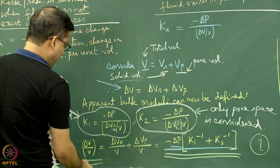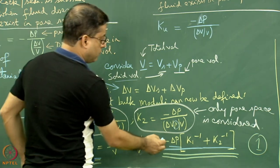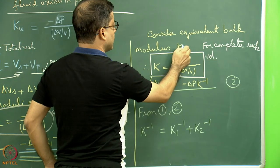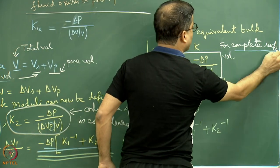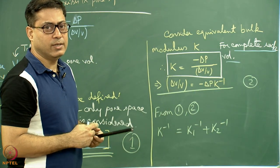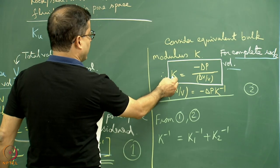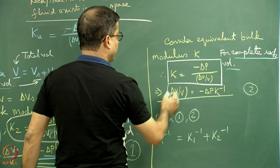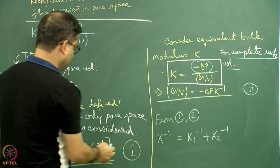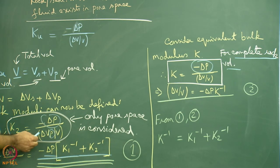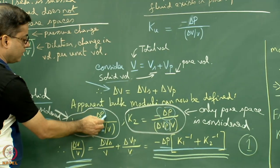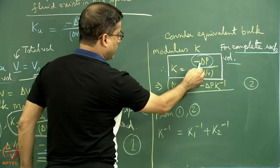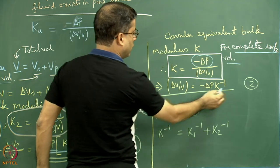Calling this equation 1: delta V by V equals minus delta P times (K1 inverse plus K2 inverse). Now consider the equivalent bulk modulus K for the complete rock volume, accounting for both solid and pore space. K is defined as minus delta P by (delta V divided by V). The same pressure change delta P was considered separately for the pore space and solid cases, giving delta V by V equals minus delta P times K inverse — this is equation 2.